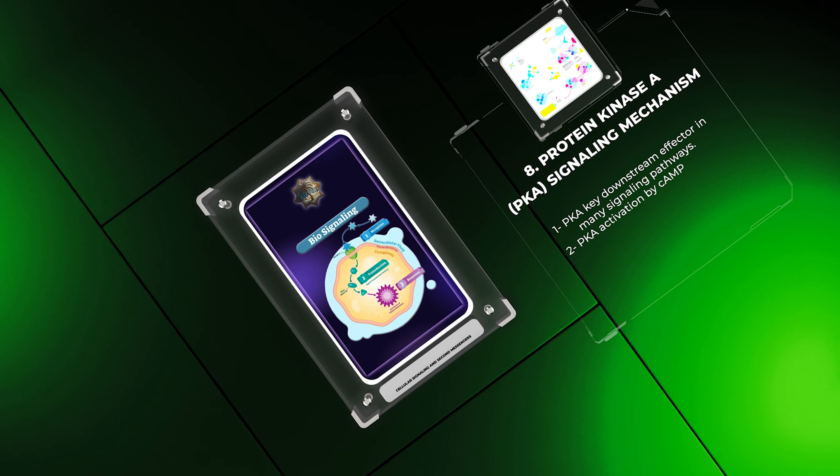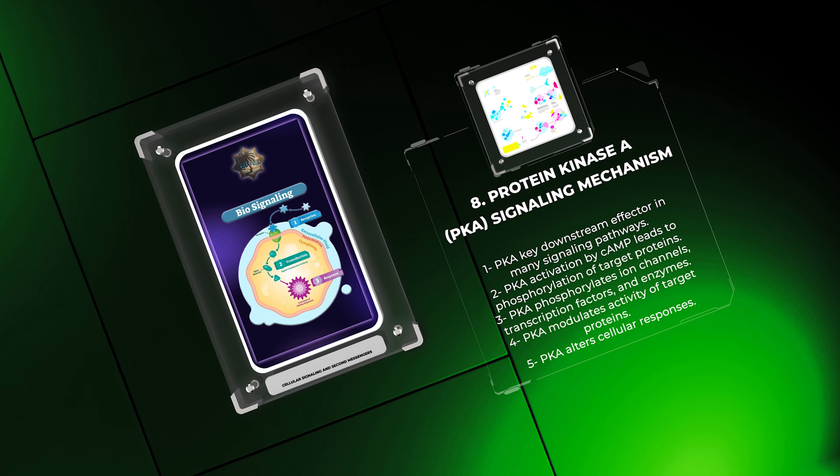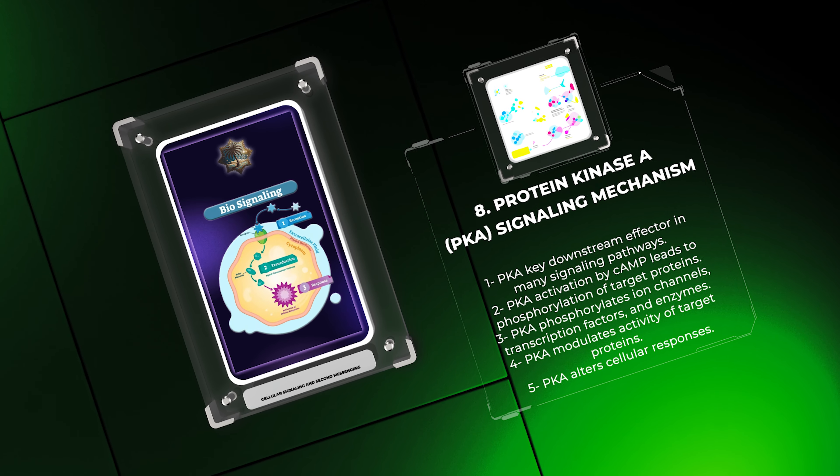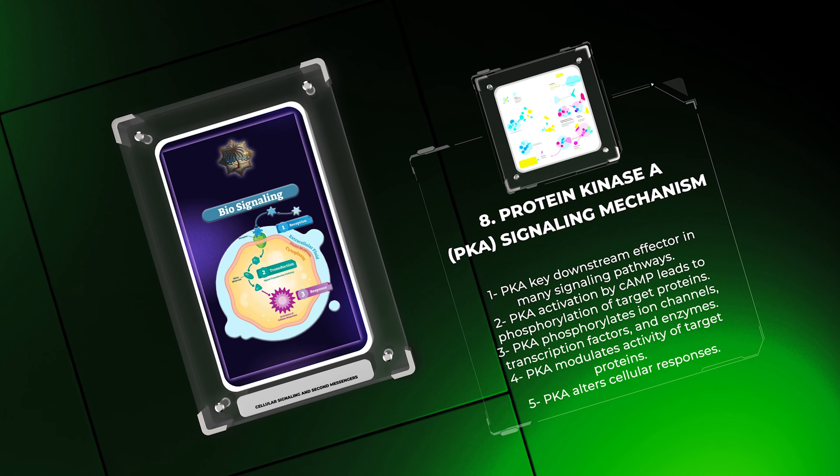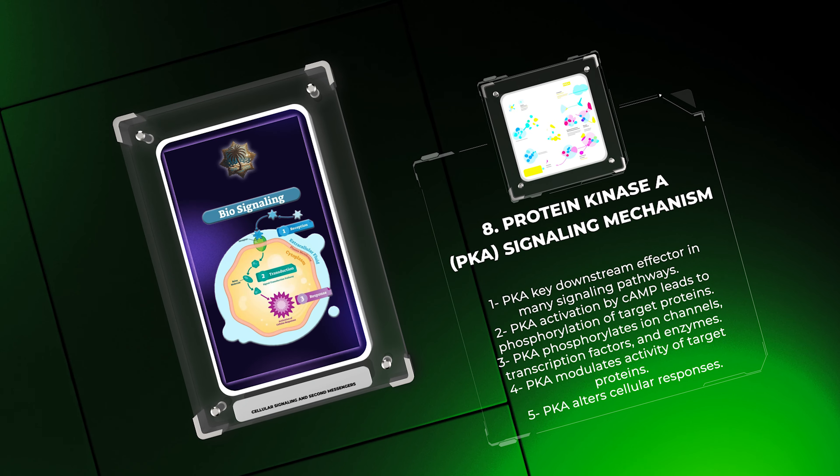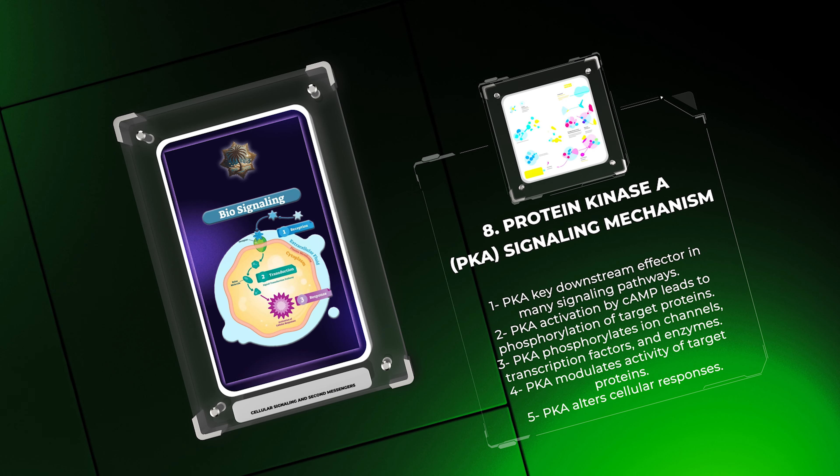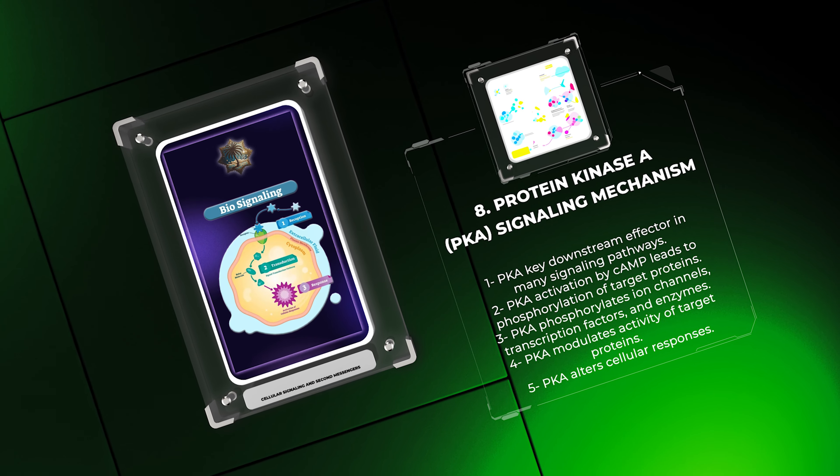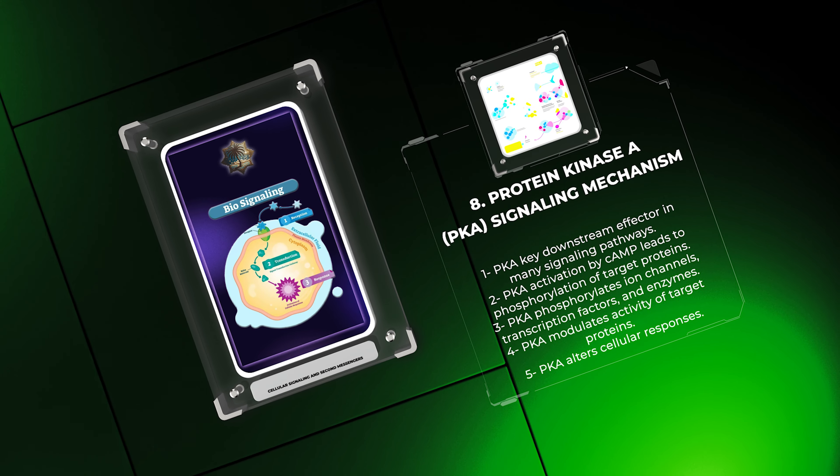PKA is a key downstream effector in many signaling pathways. Upon activation by cAMP, PKA dissociates its regulatory subunit, allowing the catalytic subunit to phosphorylate target proteins. PKA phosphorylates a diverse array of targets, including ion channels, transcription factors, and enzymes, modulating their activity and altering cellular responses.